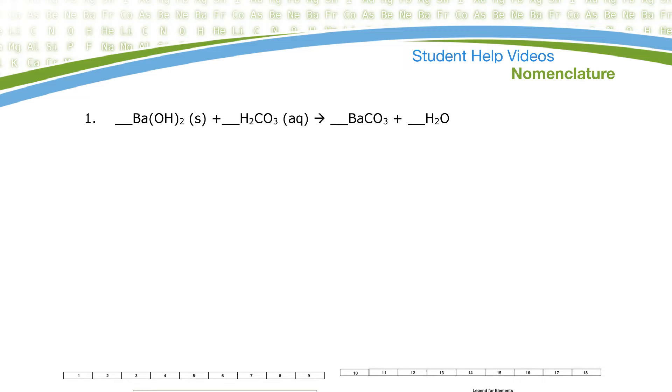Here's five examples of balancing equations. This first one, I've got barium hydroxide reacting with, looks like carbonic acid. So, and it produces barium carbonate and water.